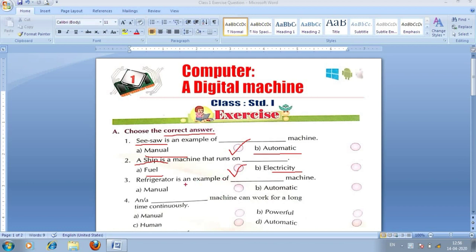Third one is, refrigerator is an example of dash machine. Yarni ki, fridge kis machine ka udhaharan hai. Matlab, a option, manual machine, b option, ya automatic machine. Babu, aapko pata hai, refrigerator, ek automatic machine ka udhaharan hai. Toh, hamara b option sahi hai.